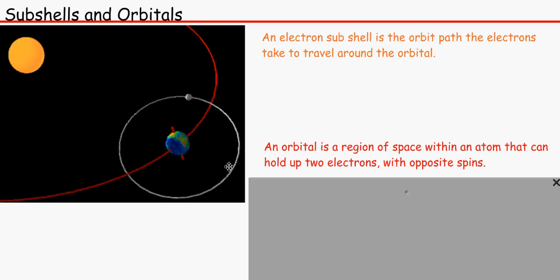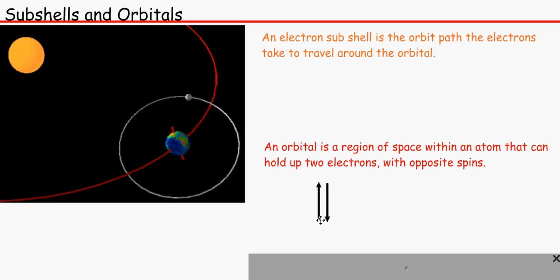Actually, an orbital is a region of space within an atom that can hold up to 2 electrons with opposite spins. Again, what's an opposite spin? This is like an opposite spin. If an electron is going this way, an electron has to be going the opposite way. They can't be going the same way like that. That is not a spin and that is not accepted for the electrons. So, this over here is the orbital or the space right over here.